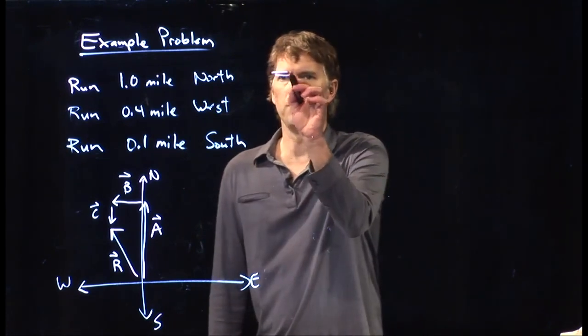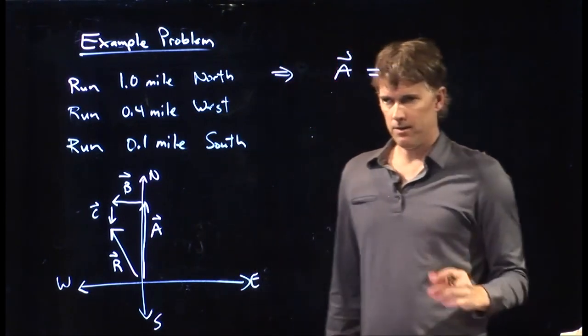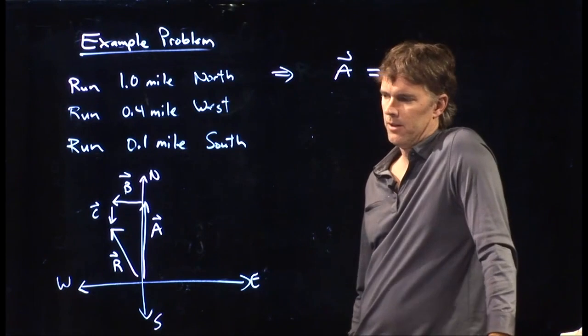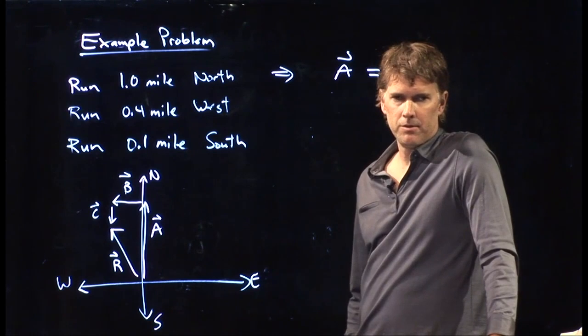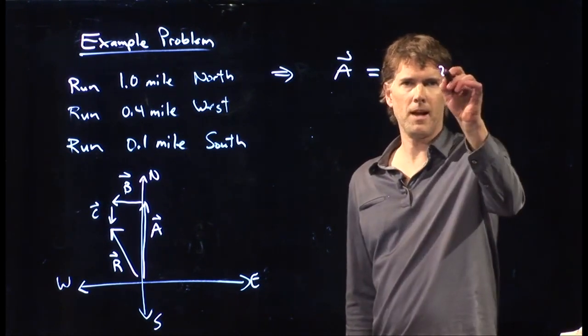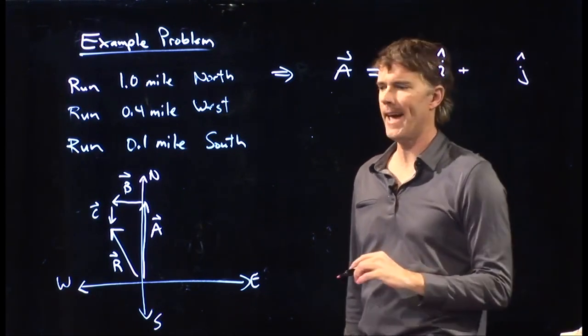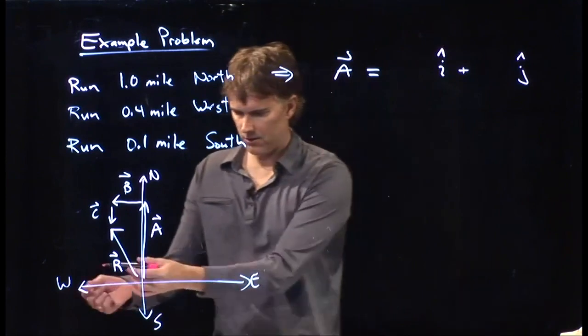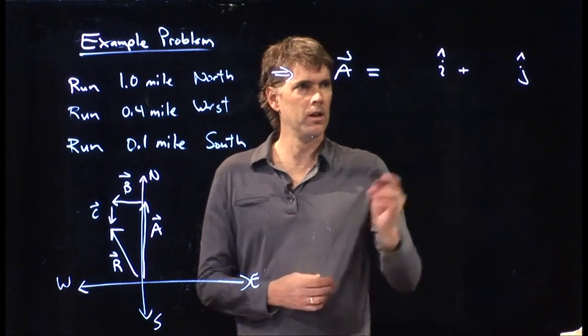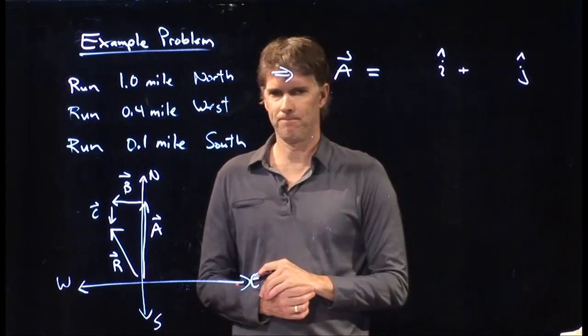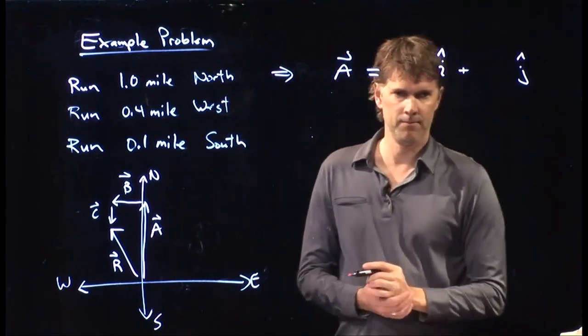So this one, this first leg, that's vector a. How do I write that as a vector in this x, y coordinate space? I need something multiplying i hat, and then I need something multiplying j hat. i hat is in the x direction. In this case, it would be along the east axis. So what do I put there? What should I put there? Zero.